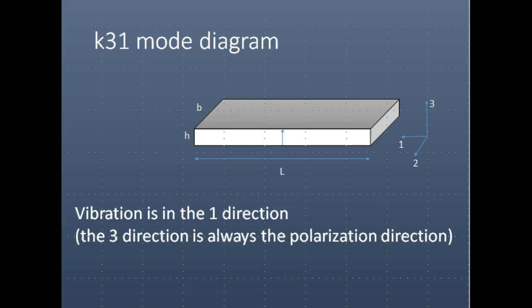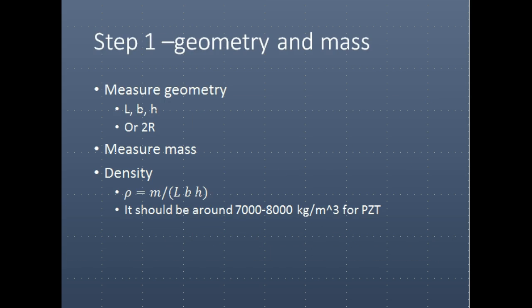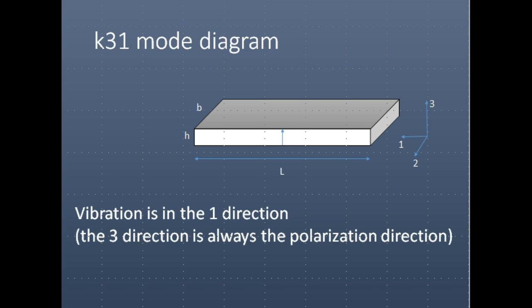Continuing the discussion of impedance measurements of piezoelectric materials, I'll now describe the different simple geometries we use to determine material properties. This figure shows the K31 mode. K31 refers to the coupling factor, but the last two numbers describe the resonance mode of the system — applying a field in the 3-direction and getting vibration in the 1-direction. The 3-direction is always the polarization direction.